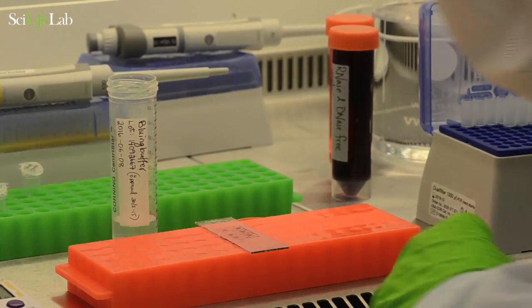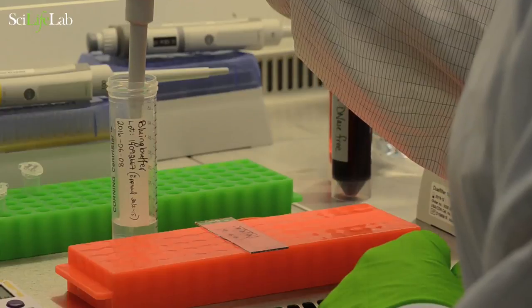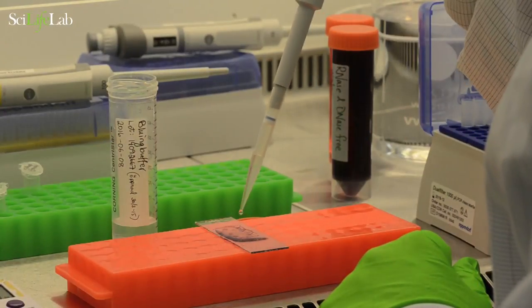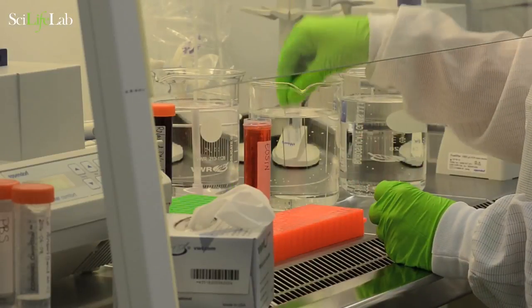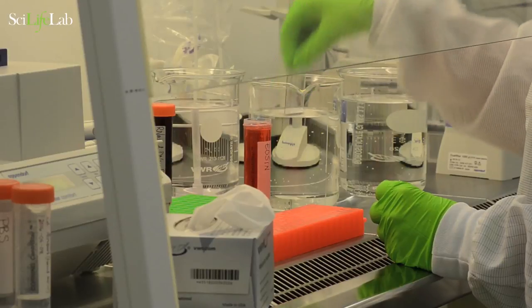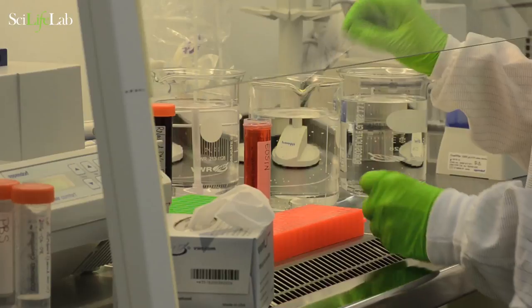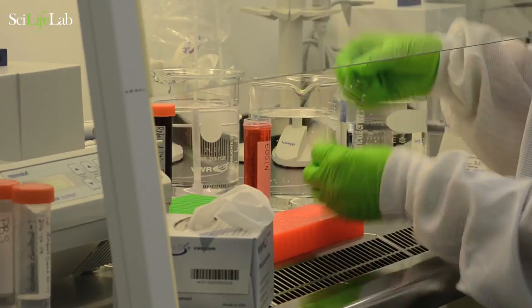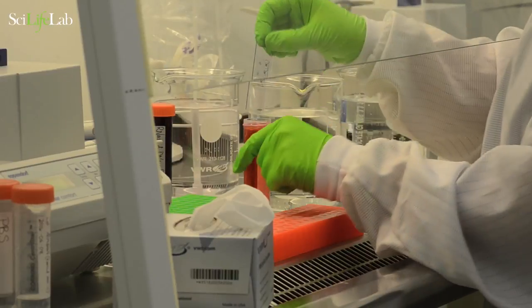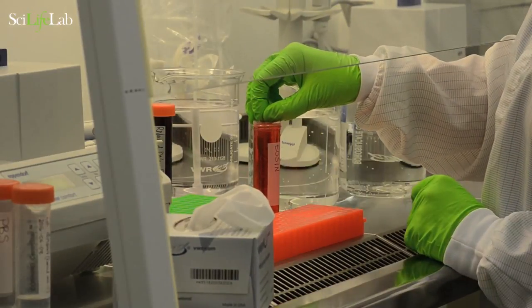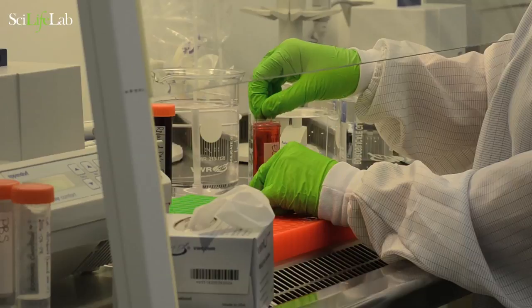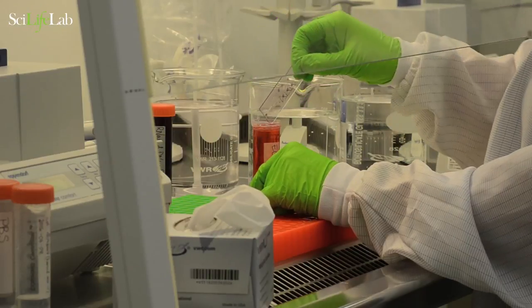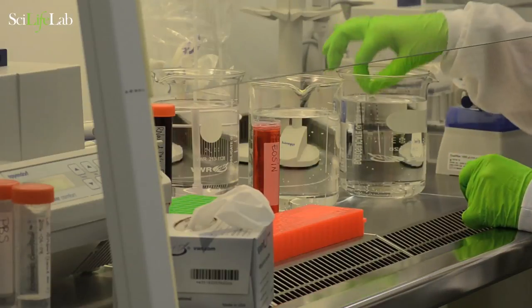Add bluing buffer and incubate for two minutes at room temperature. Dip the glass slide into water to wash off the bluing buffer. Then dip the slide into pH 6 buffered eosin for 20 to 40 seconds. Wash off the excess eosin in a beaker of clean water.